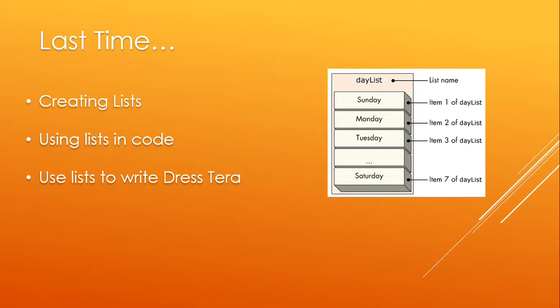Last time, if you recall, we looked at the list data type. We looked at creating lists, how to manually populate them, how to use command blocks to add items, insert items, remove items, and then to access items at a particular position in the list. We used lists to change the original address Terra program to use a list to remember all the offset values and initial position values, rather than having multiple sprites — one sprite per costume. We could get away with having a single sprite with multiple costumes.